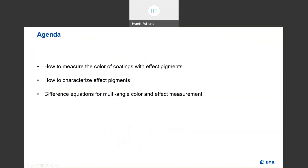Today's agenda will include how to measure the color of coatings with effect pigments, how to characterize those effect pigments directly, and we'll finish by discussing some difference equations for multi-angle color and effect measurements. In our office hours style, we won't be getting too far into the weeds on any one of these topics. I'm going to touch lightly on each one, and then we are going to open up the floor to questions.